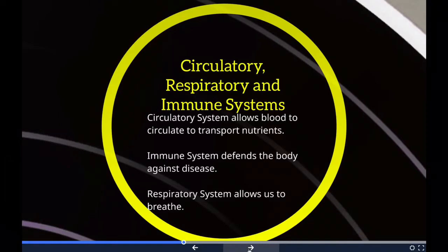The circulatory system is an organ system that permits blood to circulate and transport nutrients such as amino acids and electrolytes, oxygen, carbon dioxide, hormones, and blood cells to and from the cells in the body — to provide nourishment, help in fighting diseases, stabilize temperature and pH, and maintain homeostasis. Essentially, blood circulates to transport nutrients; the word 'circulatory' has circulation right in it.